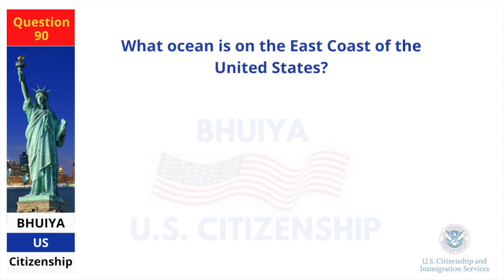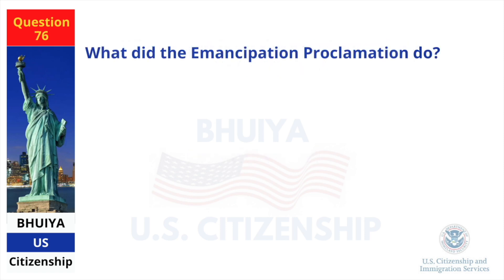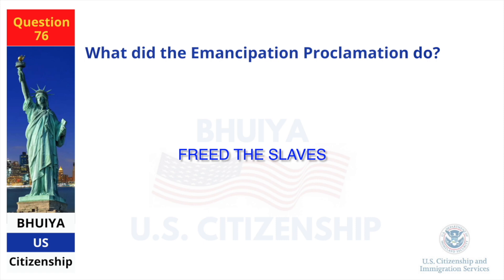What ocean is on the east coast of the United States? Atlantic Ocean. What did the Emancipation Proclamation do? Freed the slaves.